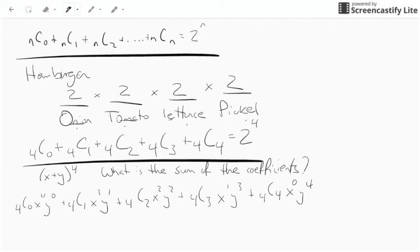Now notice that my coefficients here are going to be four choose zero, four choose one, four choose two, four choose three, four choose four. Everything else in every one of those terms is a variable, some combination of x's and y's.